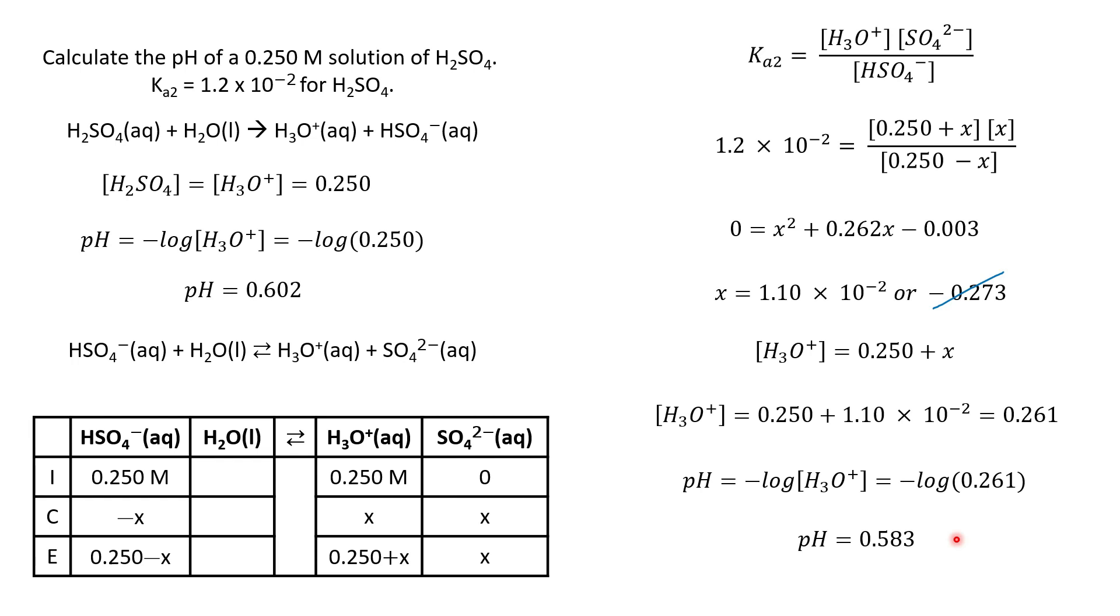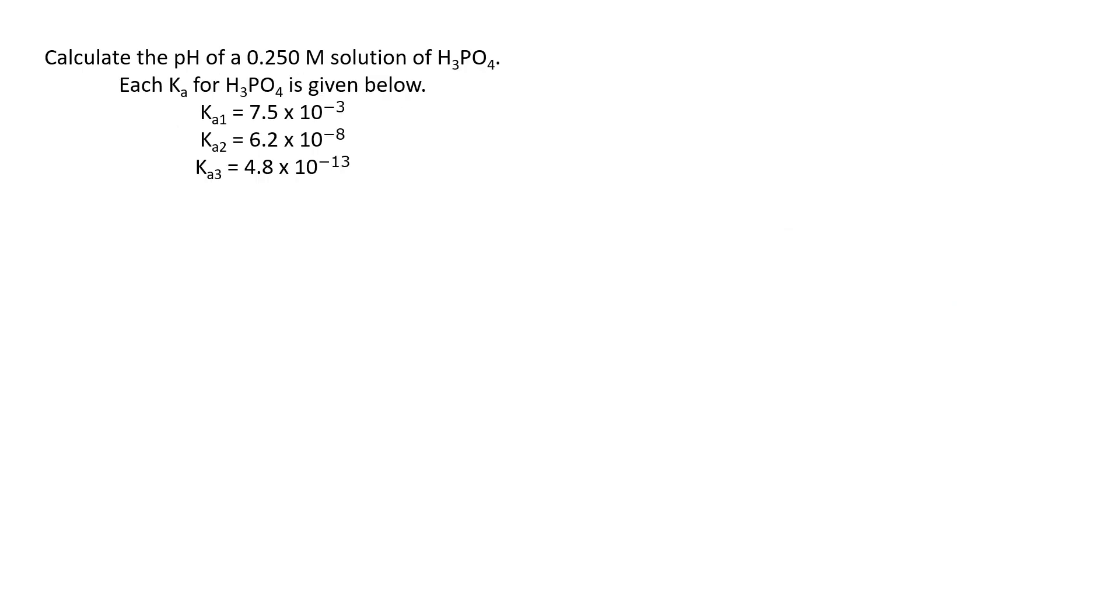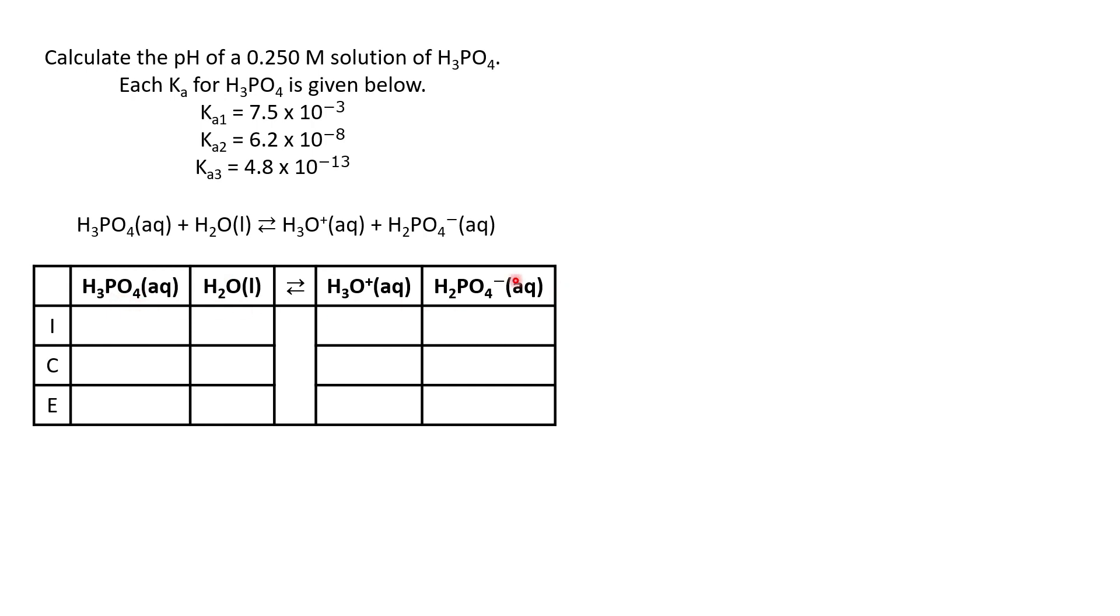Now let's take a look at a triprotic acid. So our problem is calculate the pH of a 0.25 molar solution of phosphoric acid. And we are given the Ka's for phosphoric acid below. Again, phosphoric acid has three acidic protons. We have Ka1, Ka2, Ka3. Unlike sulfuric acid, phosphoric acid does not have a strong step. Everything is in equilibrium. Let's take a look at that first step, that first acidic proton. Here is my balanced chemical equation. It is in equilibrium because this is a weak step. So let's put it in an ice table. Okay. So here it is in an ice table.